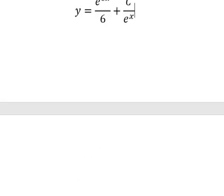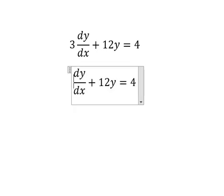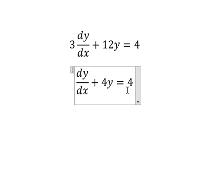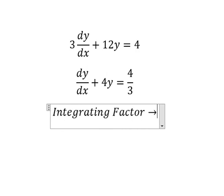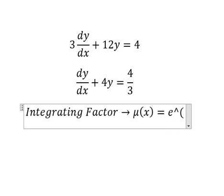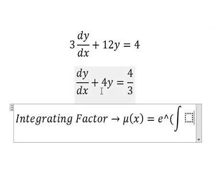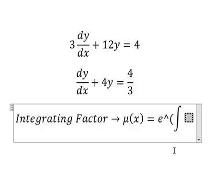Now let's go to the next one. We divide both sides by number 3. We have Y and first derivative of Y, so we can use about interpreting factor. So we need to find about mu X equals to e to the power of the interpolation. We see that positive number 4 next to Y — this is for interpreting factor.